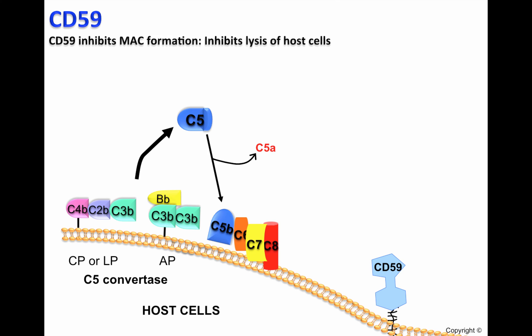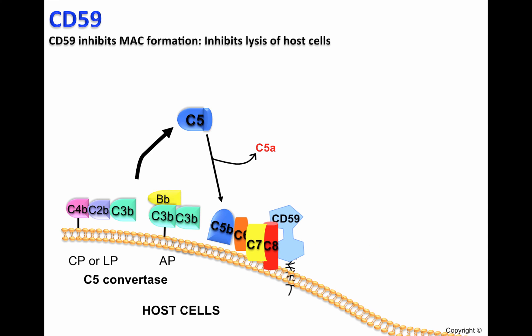Luckily, host cells express CD59, a membrane-bound complement-regulatory protein. CD59 will recognize C8 and will stop the polymerization of C9. Therefore, CD59 inhibits the formation of the membrane attack complex, or MAC, and no lysis occurs. Thus, CD59 protects host cells from complement-mediated attack.